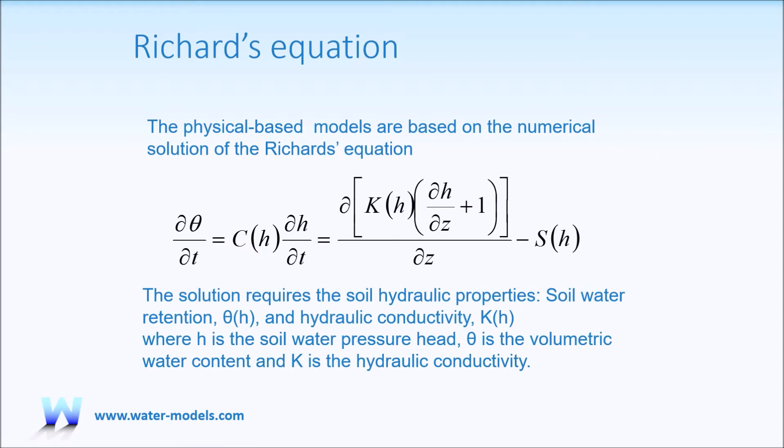The physically based models like SWAP, HYDRUS, and many others are based on the Richards equation, which is the flow equation, the combination we talked about before. The solution of this equation requires the soil-hydraulic properties, the soil-water retention and the hydraulic conductivity, both as functions of the potential. Besides, there should be some functions about root-water uptake or a sink term included.